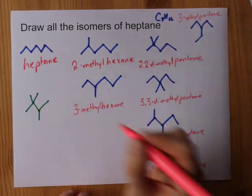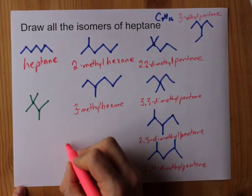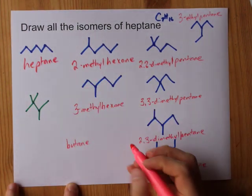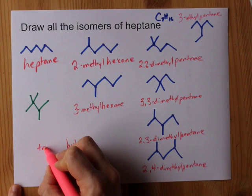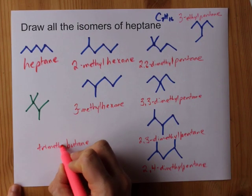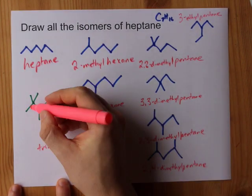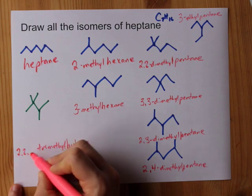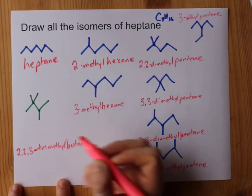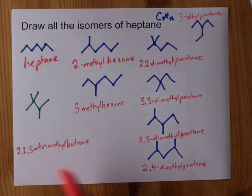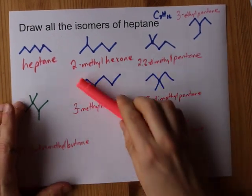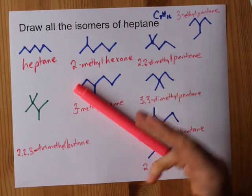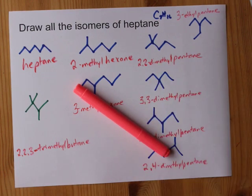The last one was a butane with 3 methyl groups on it — that makes it trimethyl. Those methyl groups are on carbons 2, 2, and 3, making it 2,2,3-trimethylbutane. Done — under 5 minutes. Best of luck.